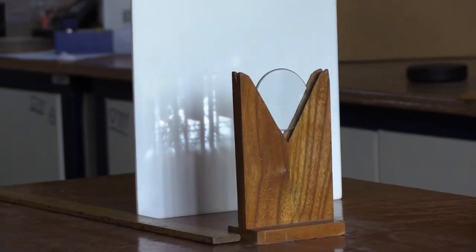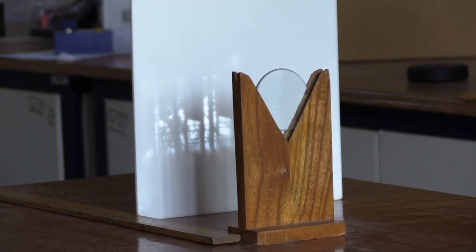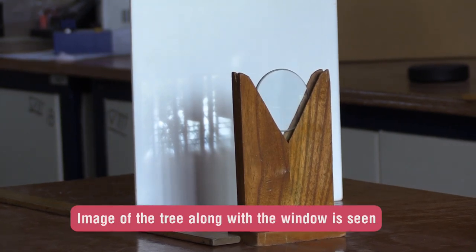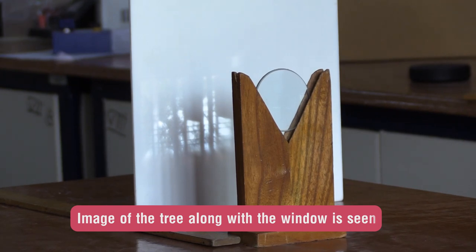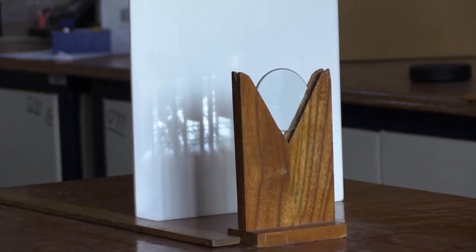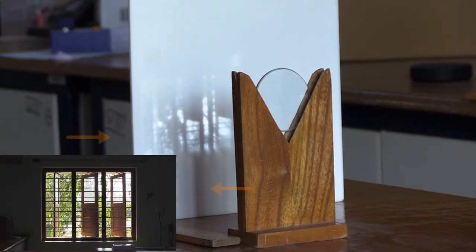Here, as light rays from the tree and the window fall on the lens, the image of the tree along with the window is seen. Notice that the image is inverted. The transparent pane on the top half of the laboratory window is observed at the bottom half in the image.